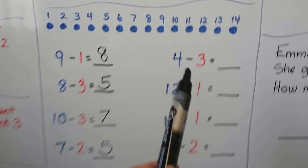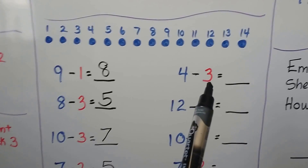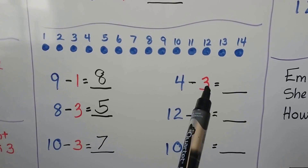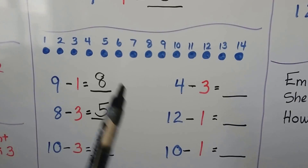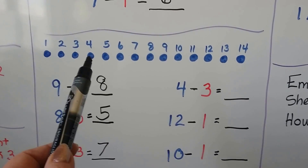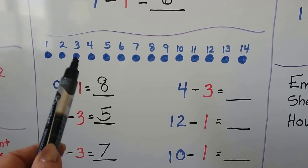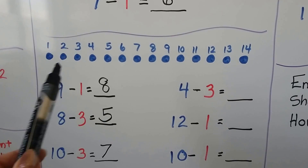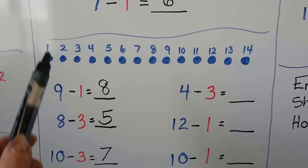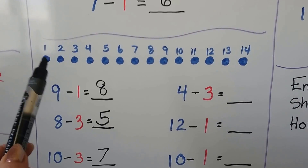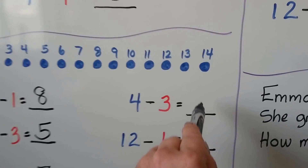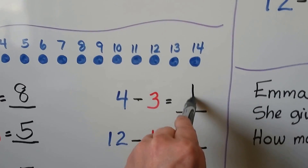4 minus 3. We start at the 4 and count back 3. Here's the 4. Let's count back 3: 1, 2, 3. That brings us to 1. 4 minus 3 is equal to 1.